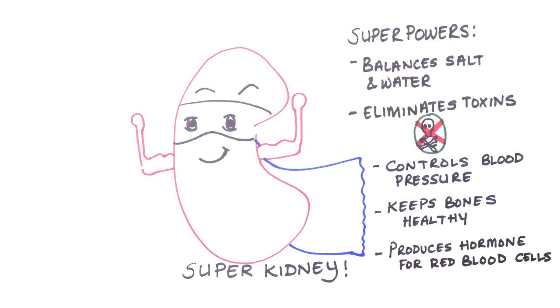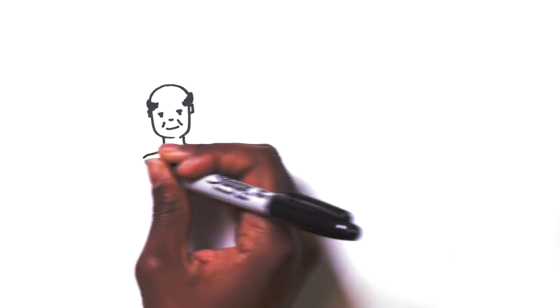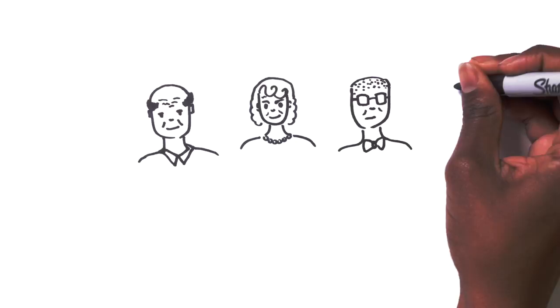But in a growing number of people with chronic kidney disease these important kidney functions are missing. Kidney disease can occur at any age but it is more common as we get older. By the time we reach 65 one in four people are likely to have kidney disease. In some people the kidneys eventually fail and they require dialysis to help their bodies to keep the right balance.